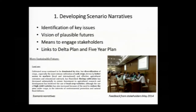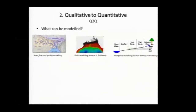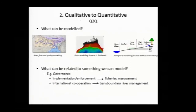The next stage was to look at how we could translate these qualitative narratives into something we could actually model — what we called a Q2Q, or qualitative to quantitative, process. Being able to use modelling tools gives us flexibility to look at the effectiveness of different management and policy interventions for different possible future scenarios. In some cases it was quite easy to quantify aspects of the narrative, such as changes in river flow, water quality, changes within the delta, and changes in mangrove extent and species. In other areas, such as the influence of governance, it became much more difficult to quantify.